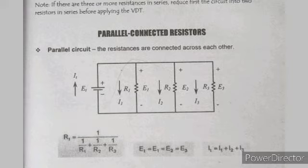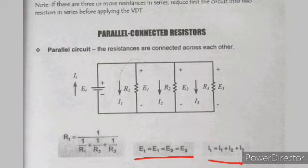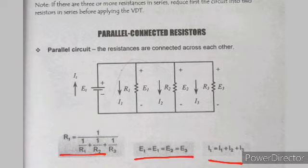In a parallel circuit, voltage is equal across all branches. Current adds up — I_total equals I1 plus I2 plus I3. This is related to Kirchhoff's Current Law: current entering equals current leaving. Regardless of series or parallel connection, total power is the summation of power consumed by each resistor.